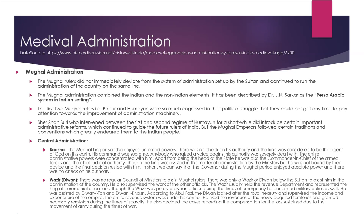The central administration of the Mughal Empire was headed by the Badshah. The Mughal king or Badshah enjoyed unlimited power. There was no check on his authority and the king was considered to be the agent of God on earth — his command was supreme. Anybody who raised their voice against his authority was severely dealt with. The entire administrative powers were concentrated in him. Apart from being head of state, he was also commander-in-chief of the armed forces and chief judicial authority.